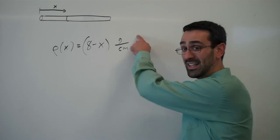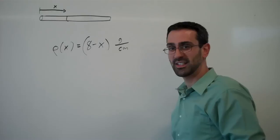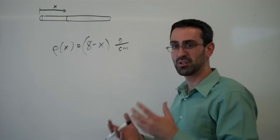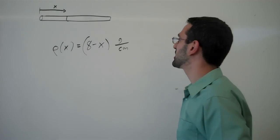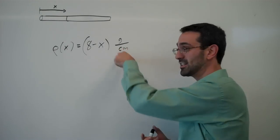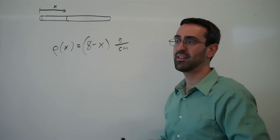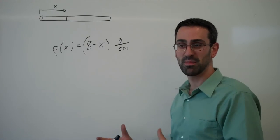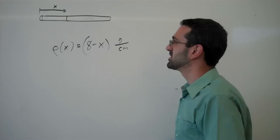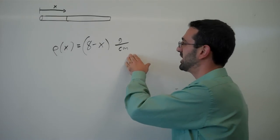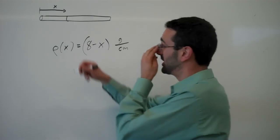This is a linear density. A density is mass per unit measurement. Sometimes you have linear densities, which is mass per length. Sometimes you'll have area densities, mass per area. Sometimes you have volume densities. In this case, we have a linear density.